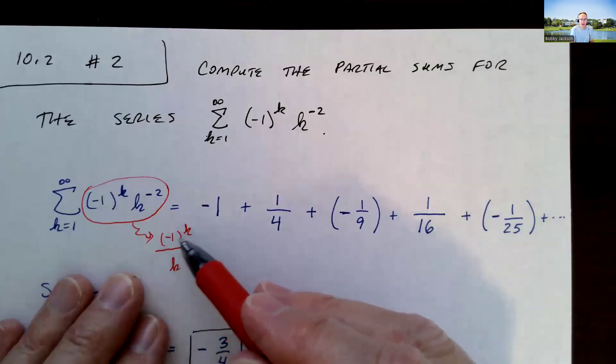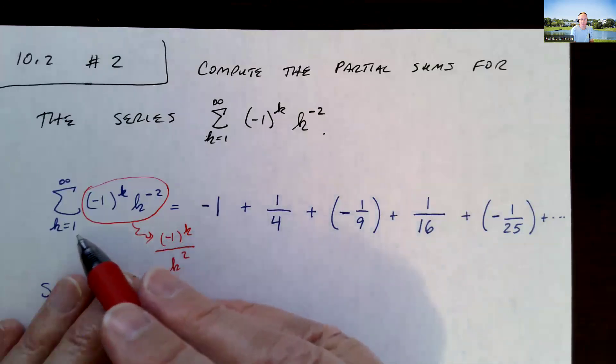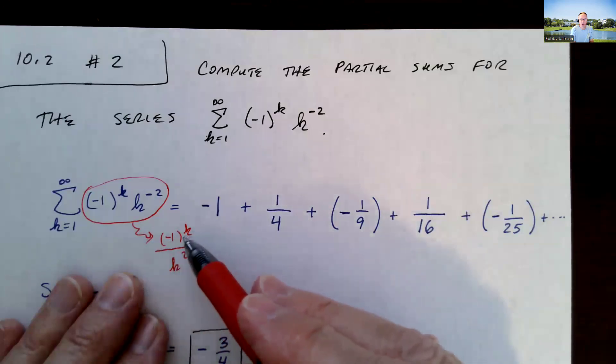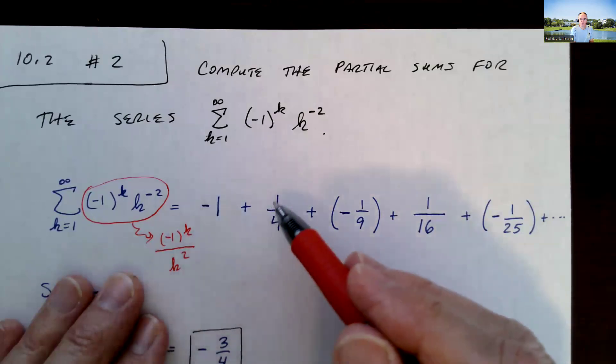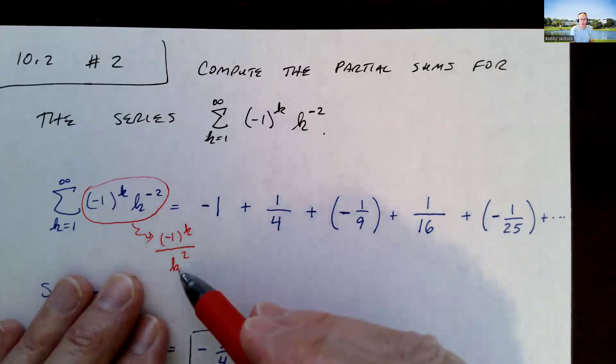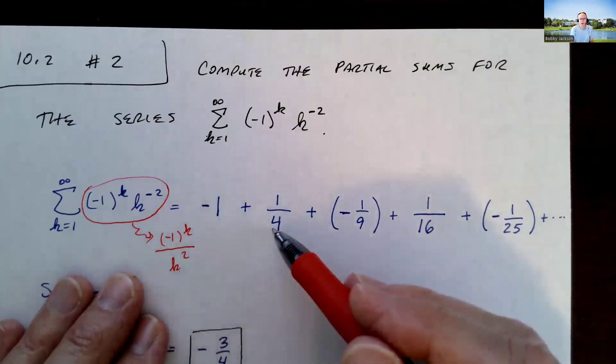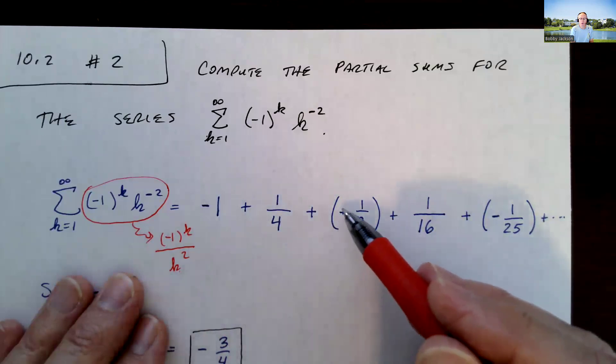And then this negative 1 to the k will be negative if k is odd. So when we plugged in 1 here, we get negative 1 over 1 squared. When k is 2, we get negative 1 squared, which is positive 1, over 2 squared, which is 4. And then we get negative 1 cubed, which is negative 1, over 3 squared, 1 ninth.